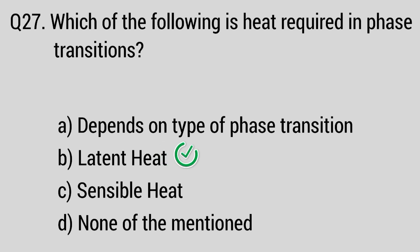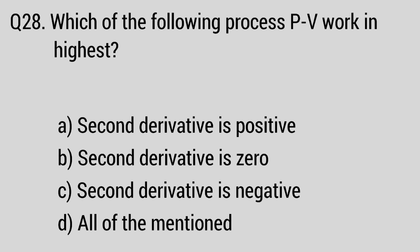Question number 28: Which of the following process gives the highest work output? The right answer is option C, second derivative is negative.